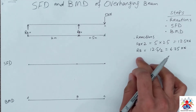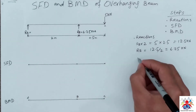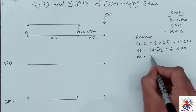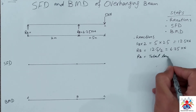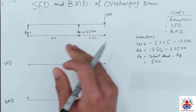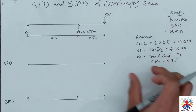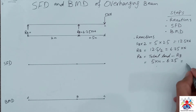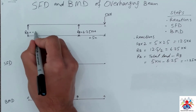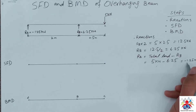We have calculated the reaction at RB, which is 6.25 kilo-newton. Now we have to calculate RA. The formula is: RA equals total load minus RB. Total load is 5 kilo-newton, as we have only one load acting on the beam, minus 6.25 kilo-newton. So the answer is minus 1.25 kilo-newton at RA.